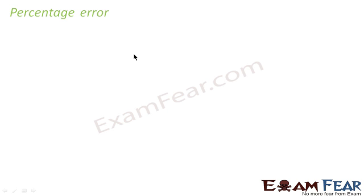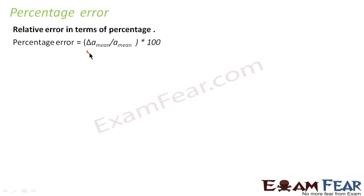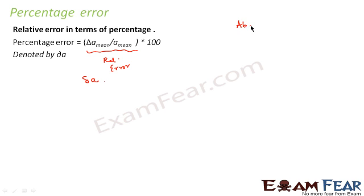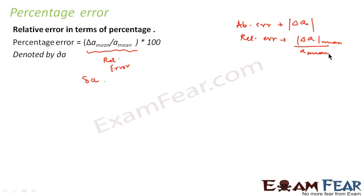The next is percentage error. Percentage error is nothing but the relative error expressed in terms of percentage. First you calculate relative error, then multiply it by 100. It is normally denoted by delta A. So to summarize: absolute error is denoted by modulus of delta A; relative error is delta A mean divided by A mean; and percentage error is relative error multiplied by 100, denoted by delta A.